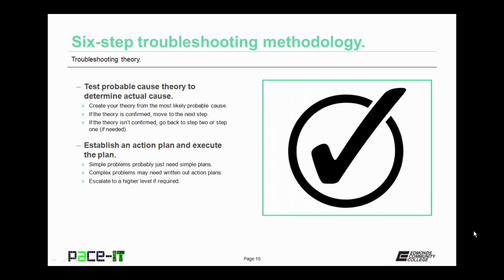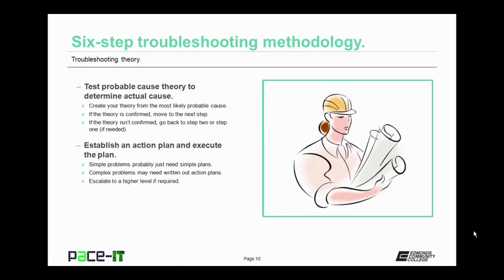Once you have determined the actual cause by testing your probable cause, you need to establish an action plan and execute the plan. Simple problems will probably just need simple plans. But if it's a complex problem, then you may need to write out the plan so that you can be sure to execute it correctly. This is another spot where you can escalate the problem if need be.